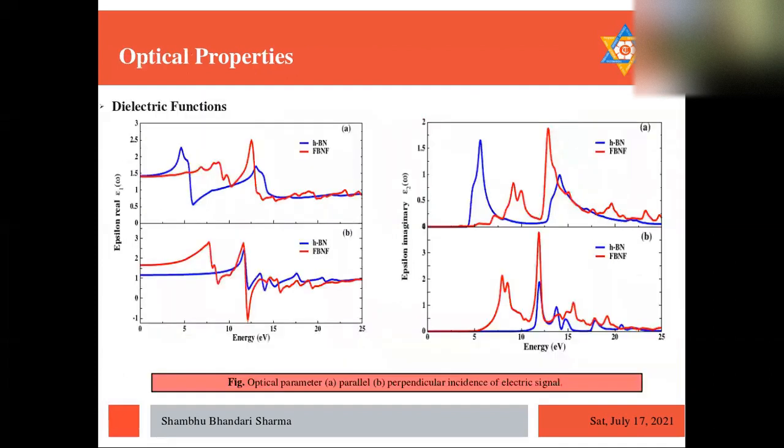And now on the optical properties, we see the dielectric function at first. We can see there the epsilon real and epsilon imaginary. The value of epsilon real at zero energy gives us static dielectric constant.